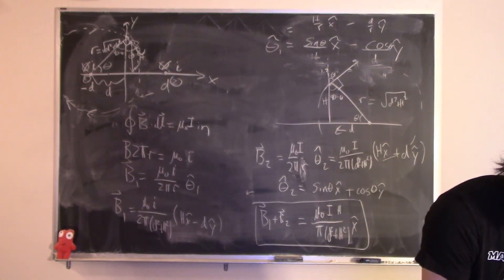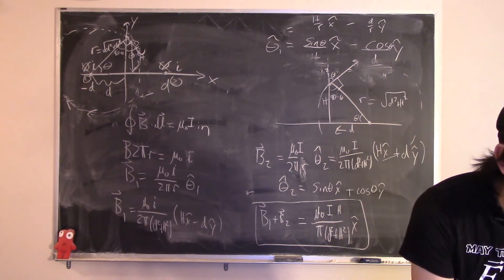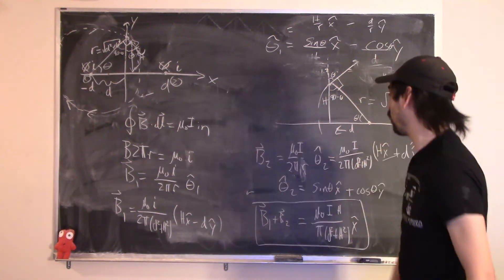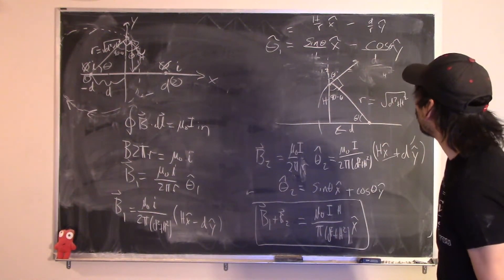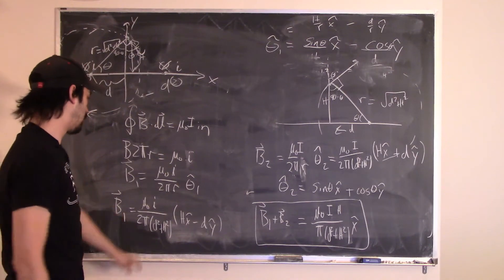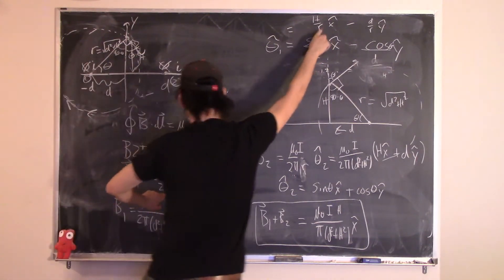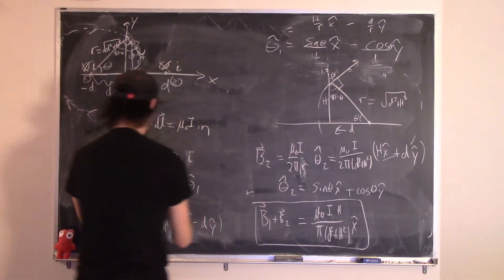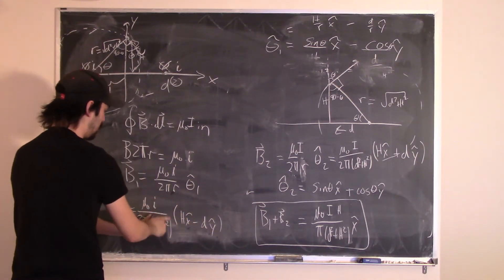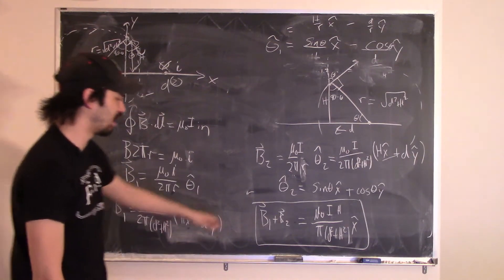A student asks why there's a factor of r collected in the denominator. I collected both factors of r together — you get r-squared, which is D² + h², and I also canceled a factor of two from adding the x-components with the 2 in the denominator. A student also asks why there's a minus cosine for the direction.